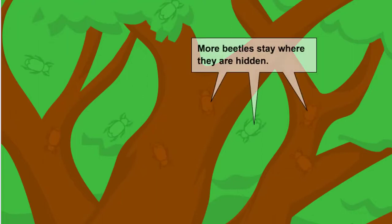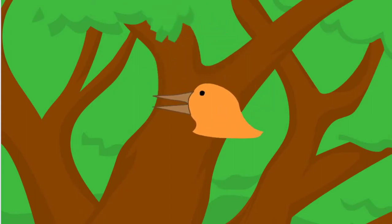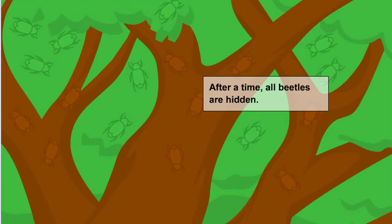So they also tend to stay in the areas in which they are hidden, which makes the task of eating them a little more difficult. Eventually, almost all of the beetles will stay in areas in which they can't be seen. As you may remember from the experiment, after 10 years, it was impossible to see any beetles.